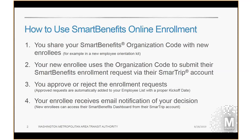Third, you log into your Smart Benefits web application and approve or reject each enrollment request. And then last, your enrollee will receive an email notification of your decision. If you approve a request, the Smart Trip card number for your employee is automatically added to your employee list with a proper kickoff date and a proper benefit category. And your enrollee can now access that information — they can see what benefit category they have and the effective date of their enrollment via their Smart Benefits dashboard through their Smart Trip account.